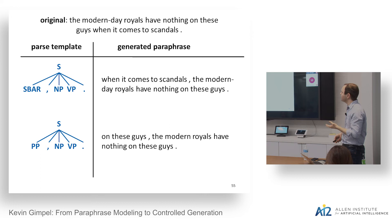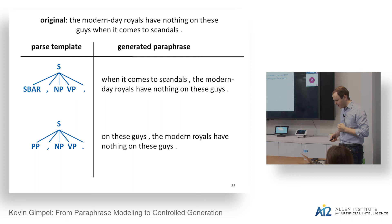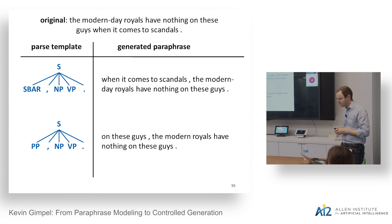For short sentences the model tends to be very good at respecting the parse template. The problems come when it drops key information. For example, 'the modern-day royals have nothing on these guys when it comes to scandals' — if the parse template has an S-bar at the beginning, it moves 'when it comes to scandals' to the front correctly. But if using a prepositional phrase template, it finds the right PP 'on these guys' but then struggles to paraphrase the rest correctly. For long sentences, we still have many challenges; better models and training could help.